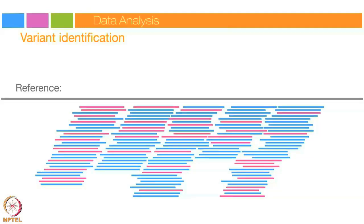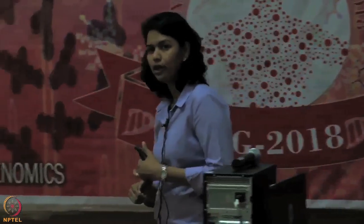Two key concepts were the takeaway of that video. One is the chemistry used for generating data on Illumina sequencers, known as sequencing by synthesis. As you saw, we actually add one base at a time and record that base — we are literally reading one base at a time — which is why we have very high accuracy in our data set.